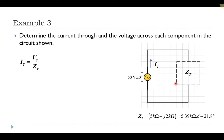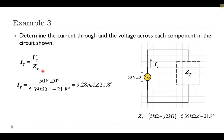Now that I know my total equivalent impedance, I can find the total current using the equivalent of Ohm's Law: total current equals total voltage over total impedance. The total voltage is 50 volts at an angle of zero; the total impedance is 5.39 kilo-ohms at minus 21.8 degrees. 50 divided by 5.39 kilo-ohms gives 9.28 milliamps, and 0 minus negative 21.8 gives 21.8 degrees. So the current is leading the voltage by 21.8 degrees — the negative phase angle on the total impedance means the voltage lags the current by 21.8 degrees.